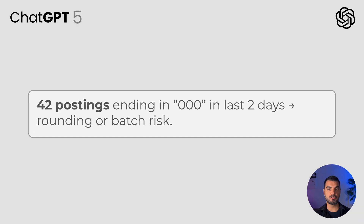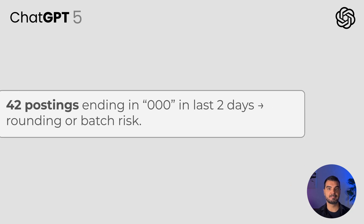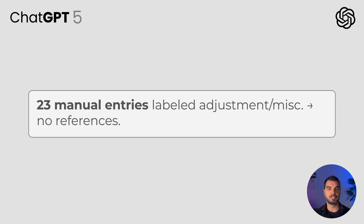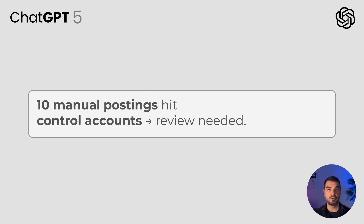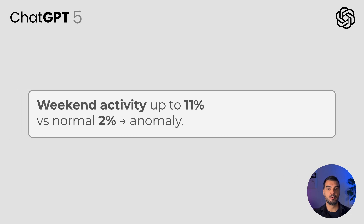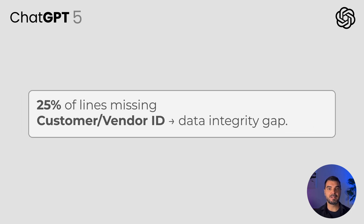ChatGPT says: 42 postings ending in 000 during the last two days. 23 manual postings include descriptions 'adjustment' or 'miscellaneous' with no references. 10 manual postings on control accounts. Weekend postings jump to 11% versus the normal 2%. 25% of lines lack a customer or vendor identifier. Now that we have these indications, all that remains is to take a targeted look at where the errors or risks are hiding.